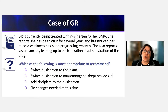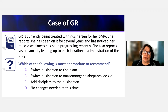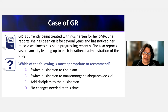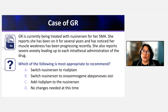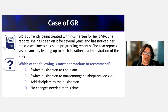GR is currently being treated with nusinersen for her SMA. She has been on it for several years and reports her muscle weakness has been progressing recently. She also reports severe anxiety leading up to each intrathecal administration. Options include: switch nusinersen to risdiplam; switch to onasemnogene; add risdiplam to nusinersen; or no changes needed. If a patient is doing well with current therapy, there is no reason to change. However, if there is a decline in function, it is appropriate to consider an alternative.